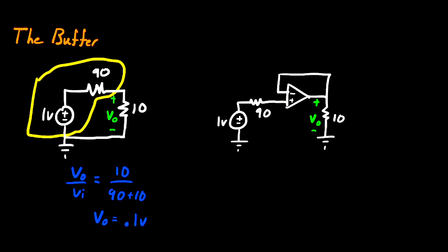So now if you have this Thevenin model and you want to apply that 1-volt source to a 10-ohm resistor, you're not going to be able to get more than 0.1 volts at your output. So this is where the buffer circuit comes in.